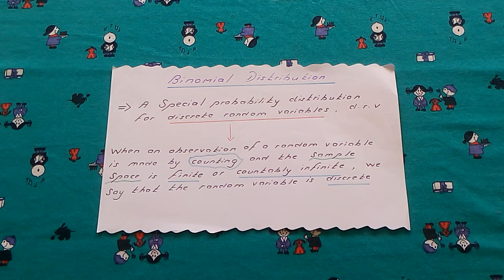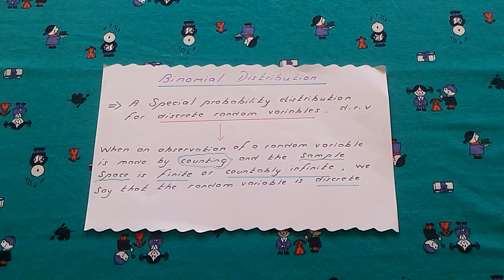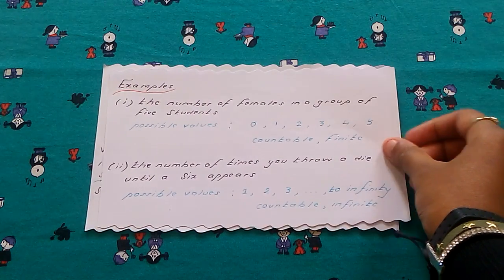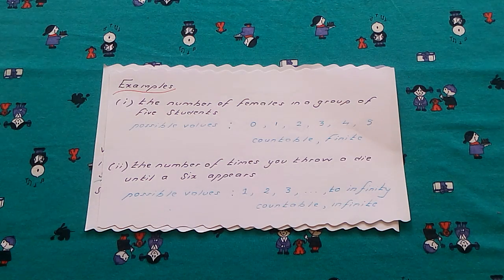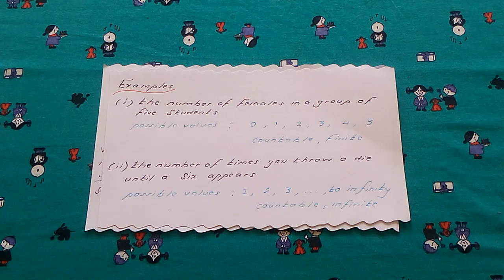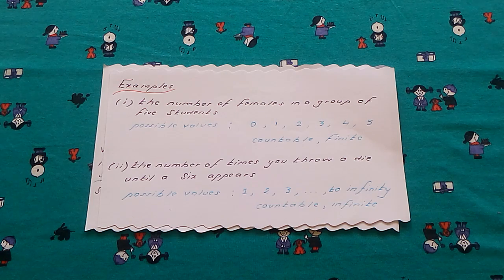Let's check out the following examples. The first example: the number of females in a group of five students. The possible values are 0, 1, 2, 3, 4, or 5. This is an example of countably finite — we may have no female at all, or one, two, three females, up to five females.